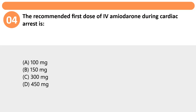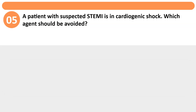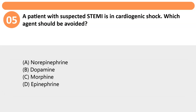The recommended first dose of amiodarone during cardiac arrest is: A. 100 mg. B. 150 mg. C. 300 mg. D. 450 mg. Answer: C. The initial dose is 300 mg IV/IO push during cardiac arrest.